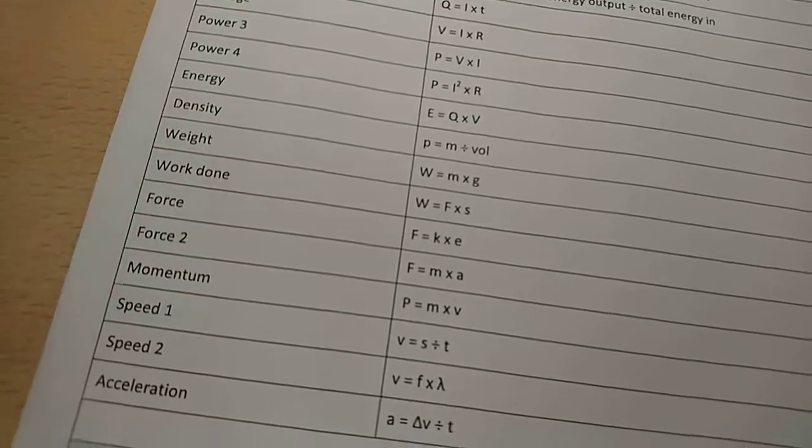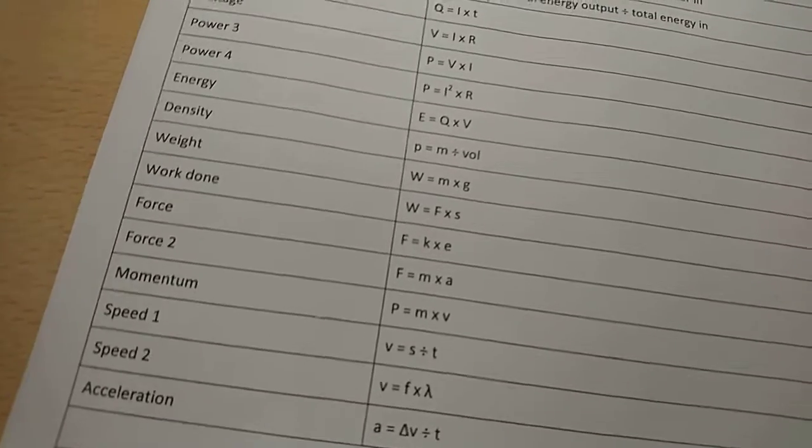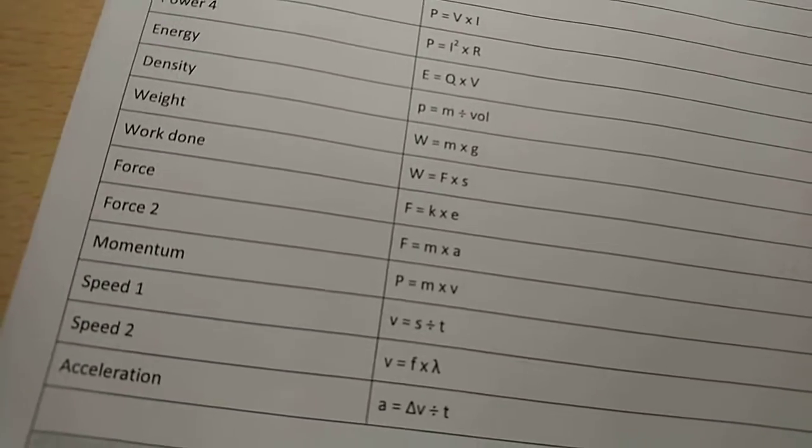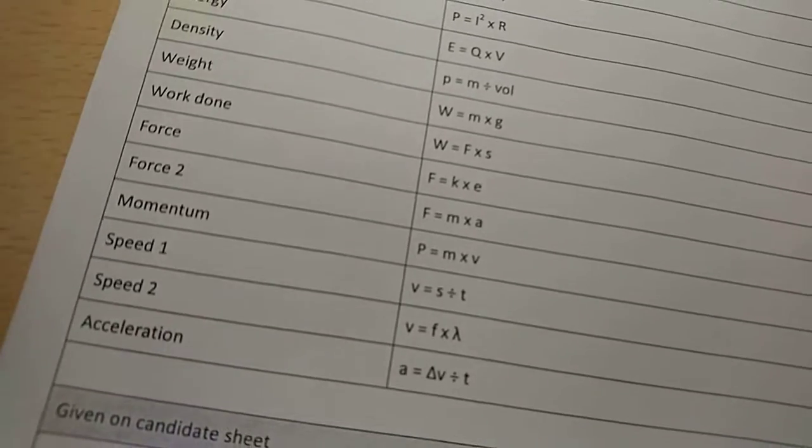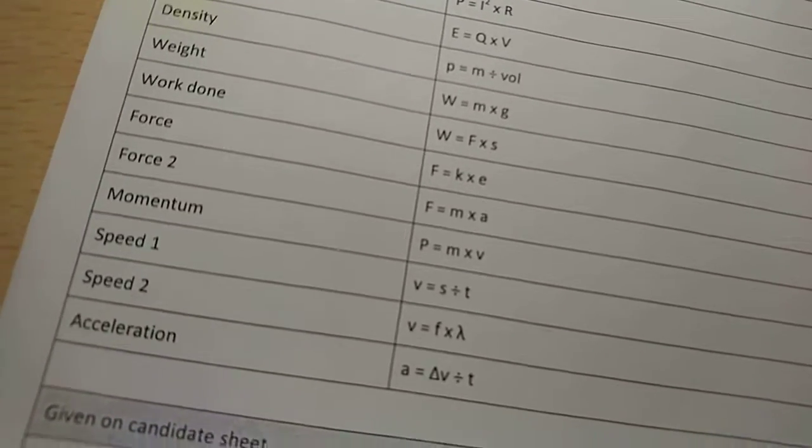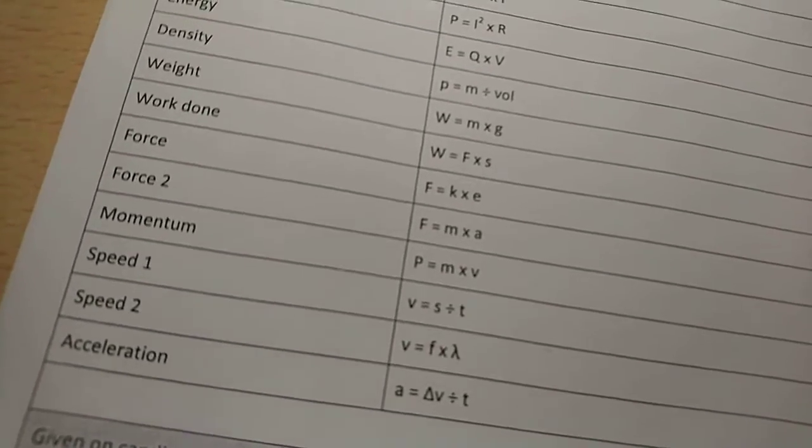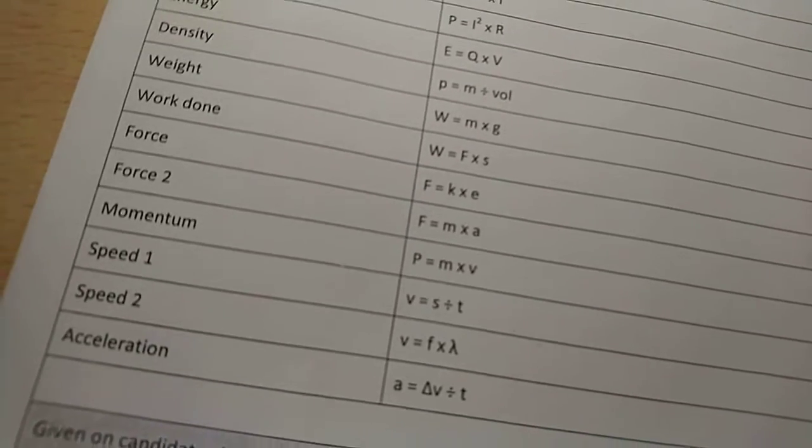Force. So force F equals K times E. That's force equals spring constant times extension. Force is in newtons, spring constant is in newtons per meter, and extension is in meters.